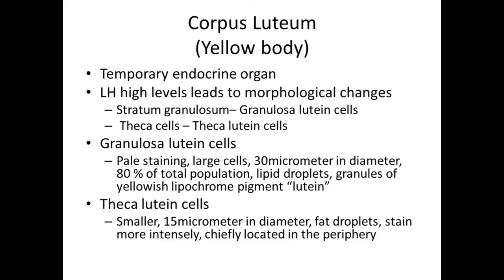After ovulation, the ruptured follicle does not degenerate at once but is transformed into a temporary endocrine organ called the corpus luteum. It is named so because it appears yellow to the naked eye in fresh unsectioned ovary. High levels of luteinizing hormone lead to morphological changes such that cells in the stratum granulosum convert into granulosa lutein cells and the theca cells turn into theca lutein cells.